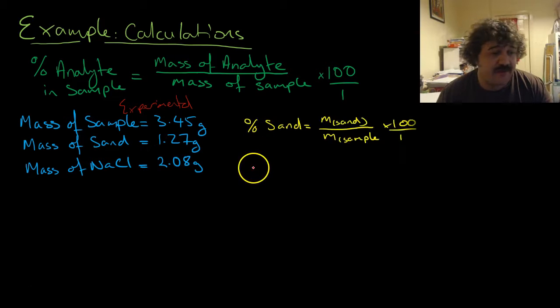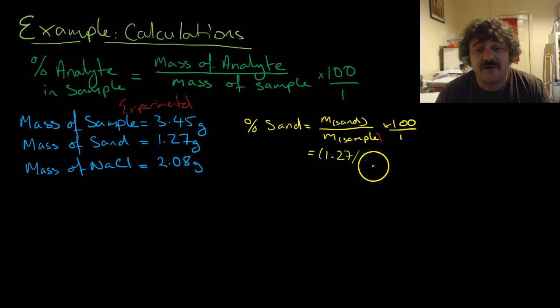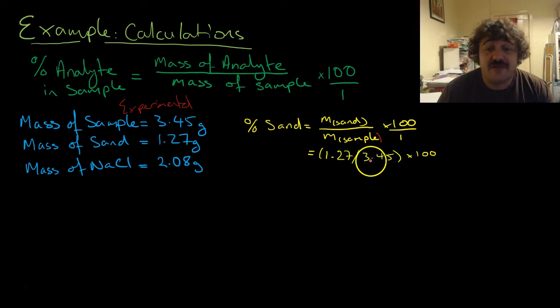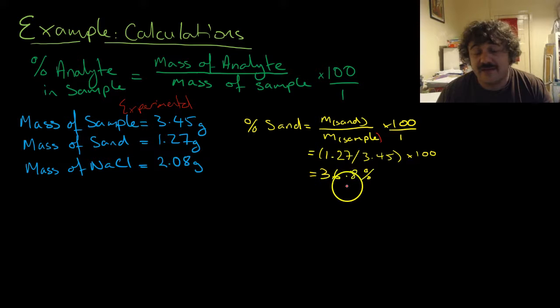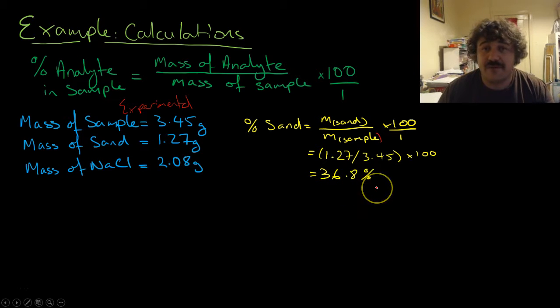Let's have a look at what we get. Let's look at the percentage of sand. It's the mass of the sand divided by the mass of the sample, times 100. So that's 1.27 divided by 3.45, times 100. That gives us 36.8%.